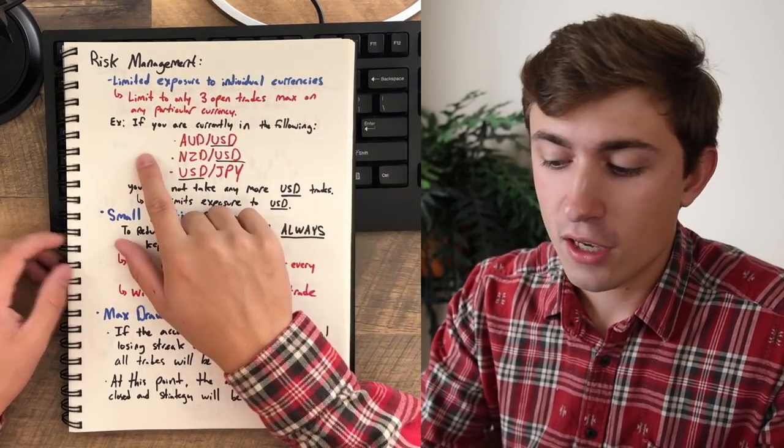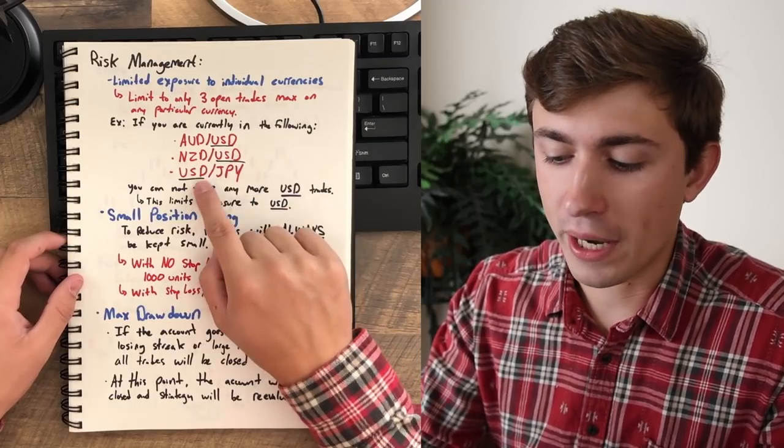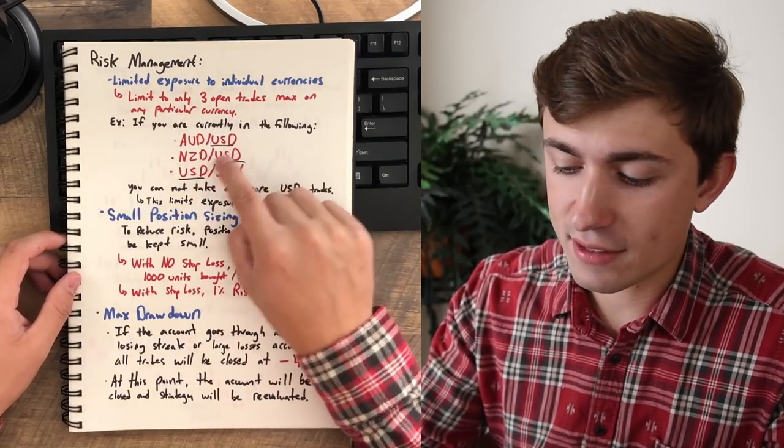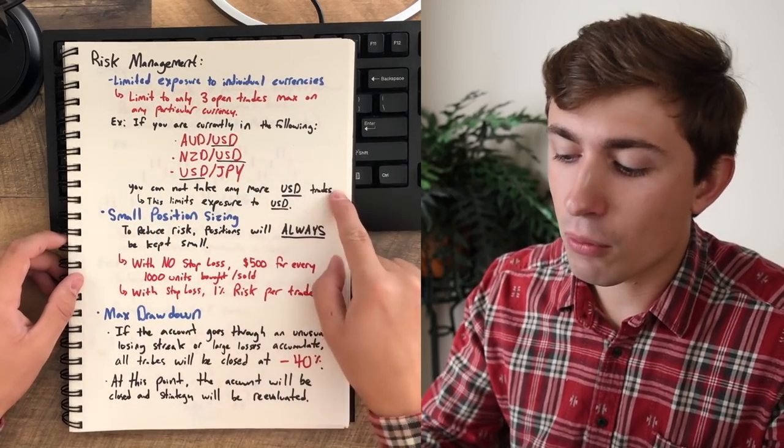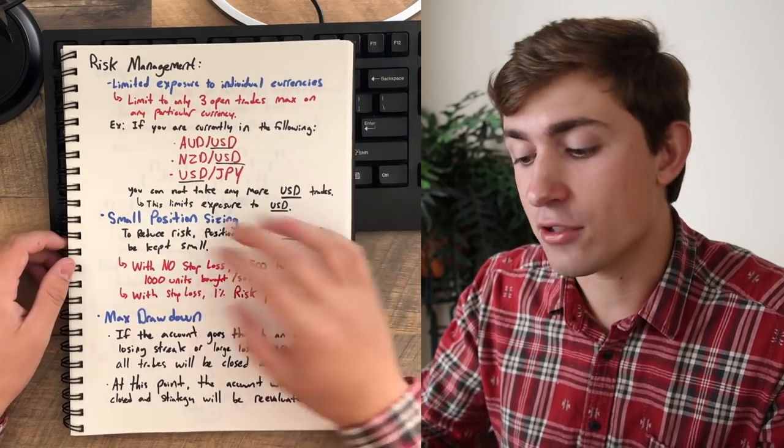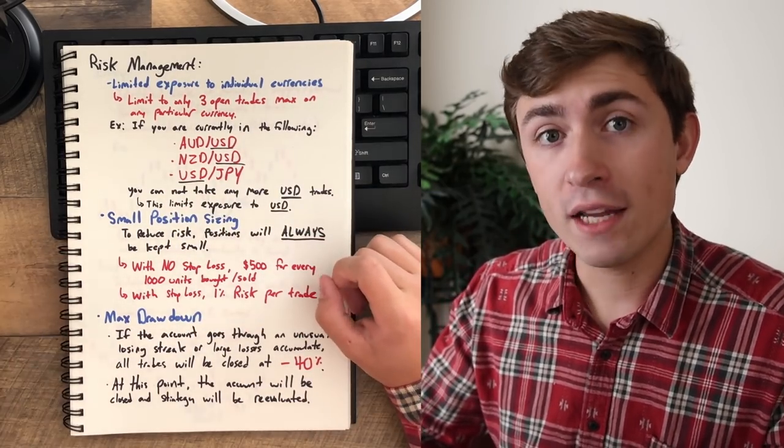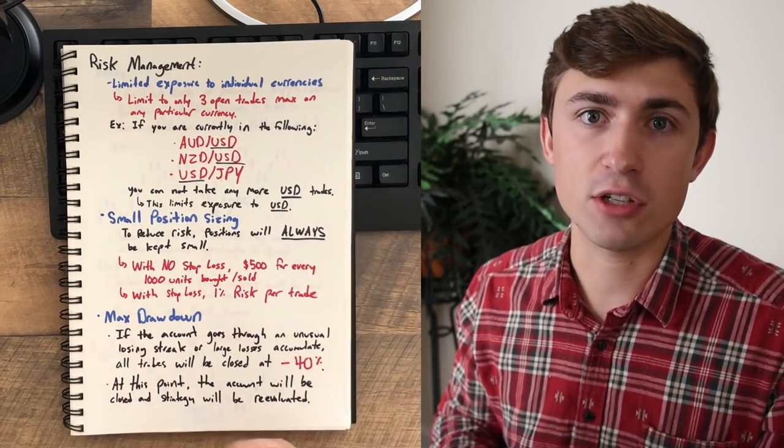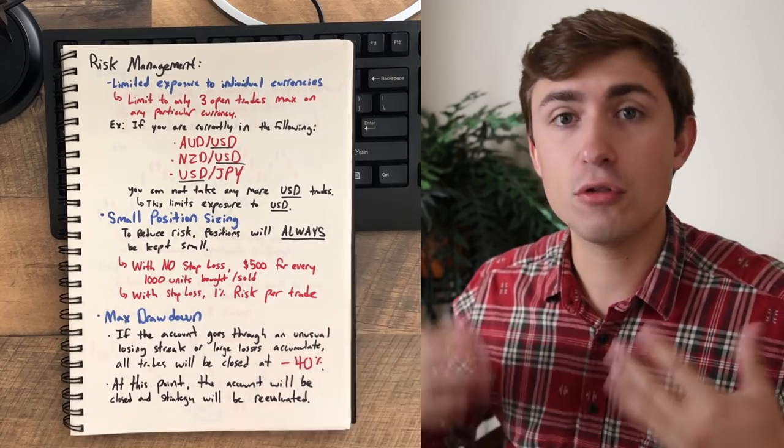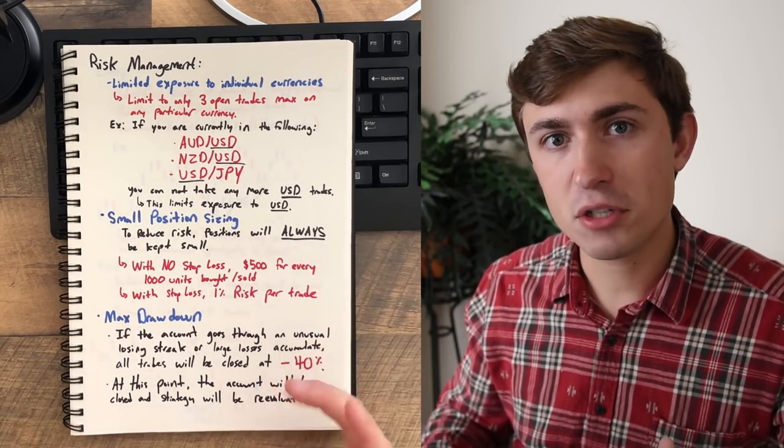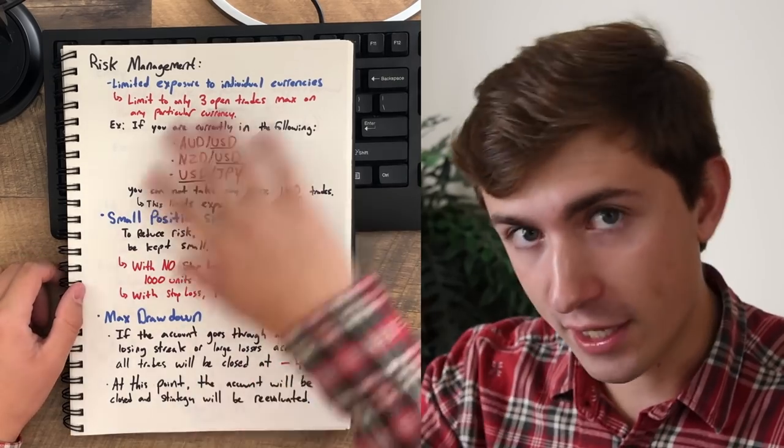Notice there's an entire page here full of other things to talk about. Limited exposure to individual currencies. So for example, if I'm trading AUD USD, New Zealand dollar, and USD yen, right? If I have three USD trades, I cannot take any more US dollar trades. This is a part of my plan for a reason. I don't want to be overexposed to the movements of the US dollar. Why? Because this puts the account at risk. Anytime you take a position in the market, you are risking your capital, right? So we don't want to risk too much on any particular one move. It's not about how much money you can make in trading. It's about managing your risk and sticking to the plan.